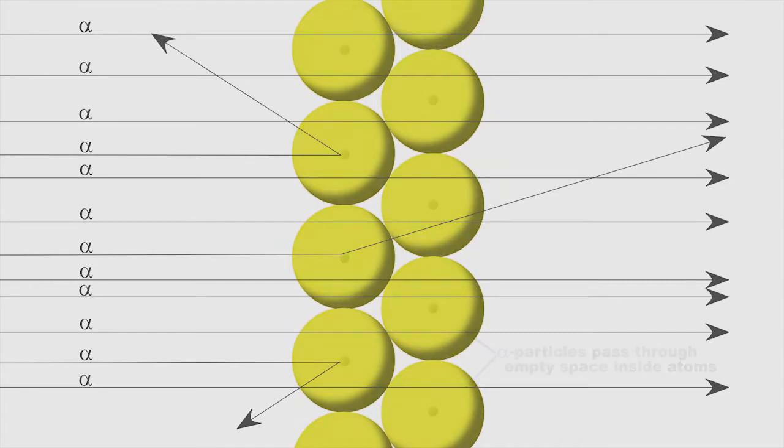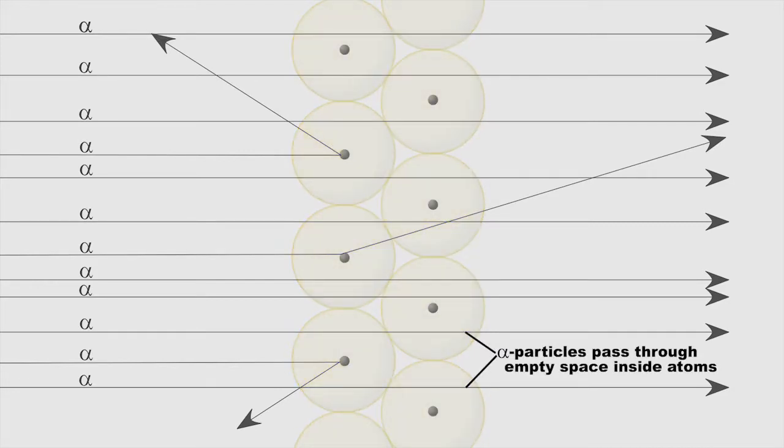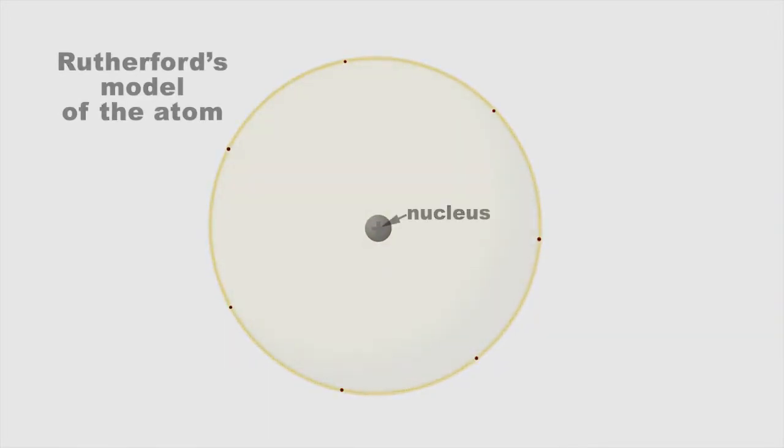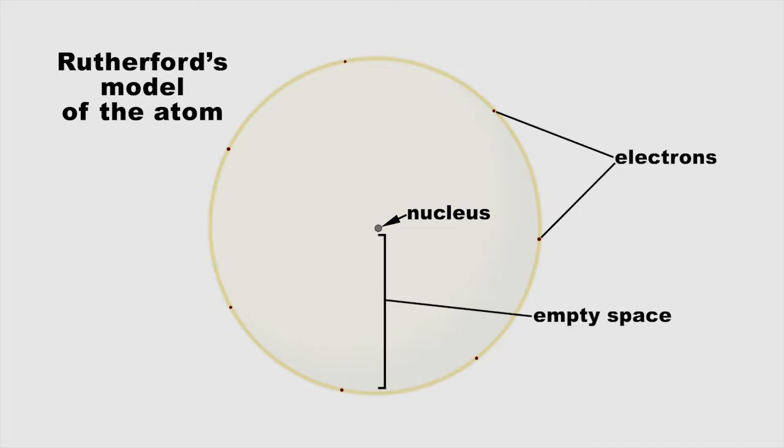This led him to propose that most of the interior of an atom is actually empty space, with most of the mass and all of the positive charge concentrated in a tiny central region called the nucleus. If the nucleus was the size of a marble in the middle of a football field, the electrons would be dots out at the edge of the field, with nothing in between.